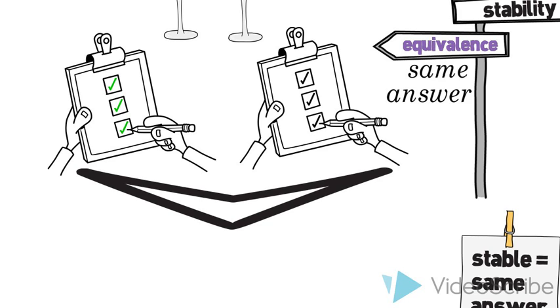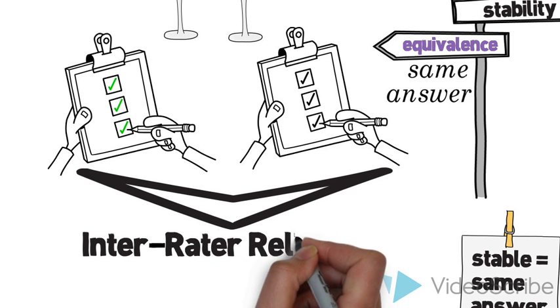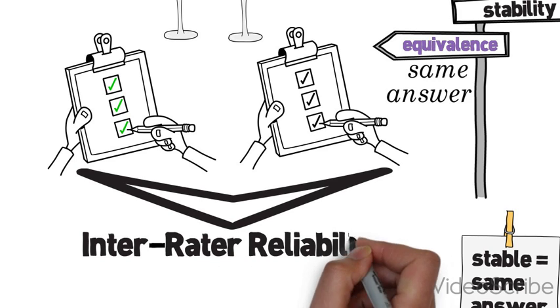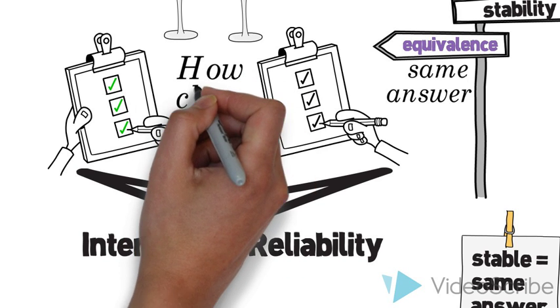The most common method for assessing the equivalence of answers to the same question is by estimating inter-rater reliability. To assess inter-rater reliability, you have two or more different interviewers ask the same question to the same person. The closer the answers are to each other, the more equivalent the two interviewers are.